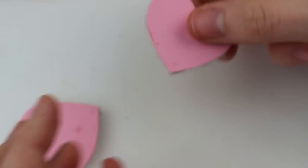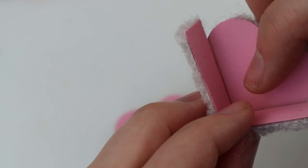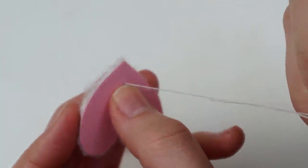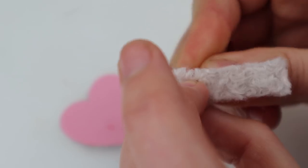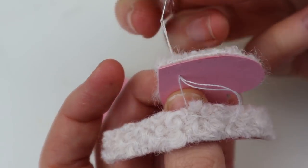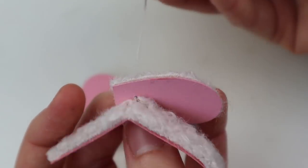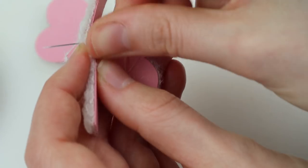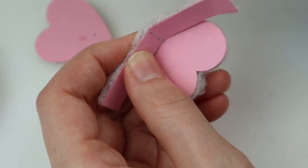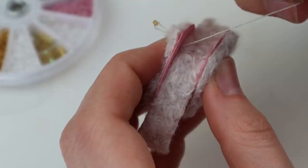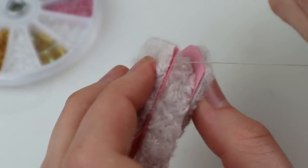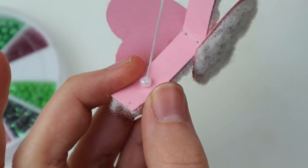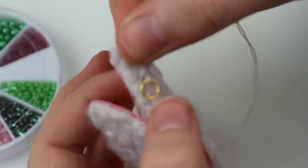To be secure before gluing it together I decided to stitch it together in the bottom. Before assembling I sewed two golden hoops to the sides, this was meant for the chain to attach to.